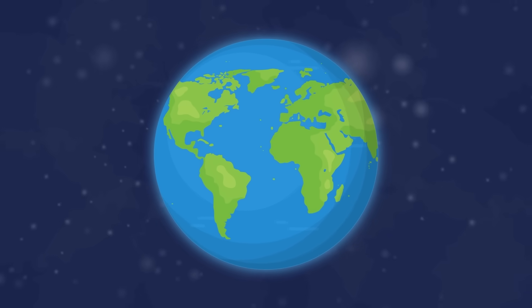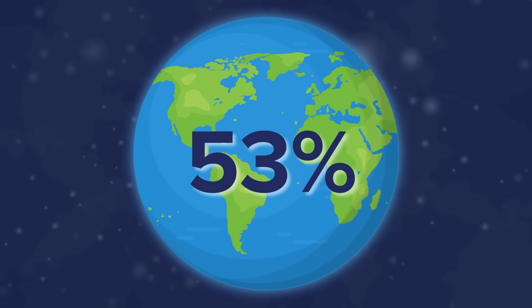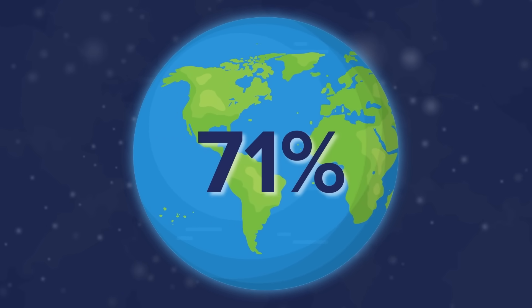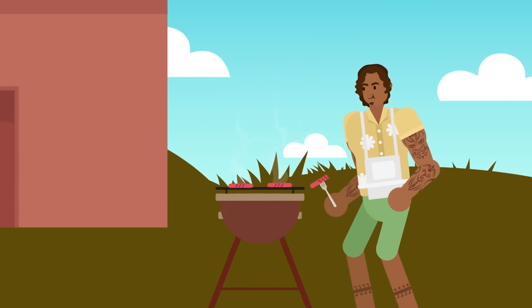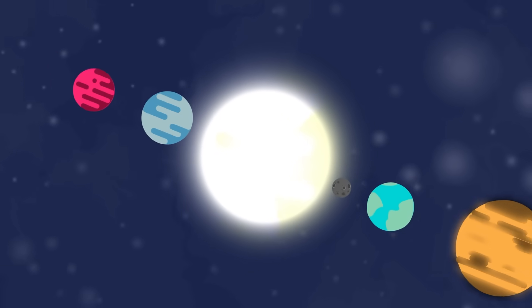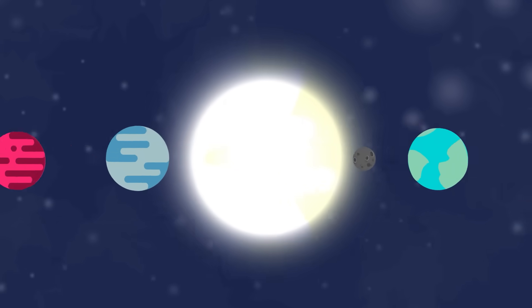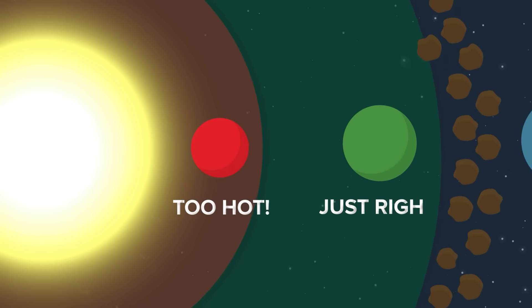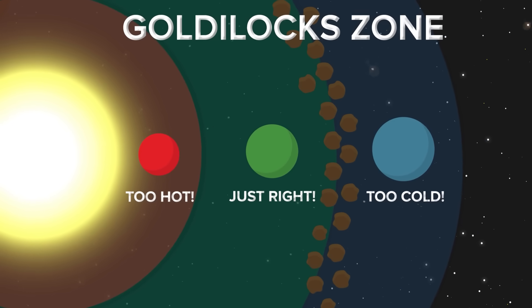Earth is often referred to as a water planet, with 71% of Earth's surface being covered in salt or fresh water. Essentially, we're all sort of living on mountains sticking out of the water. This is all made possible because Earth is in the Goldilocks Zone, close enough to the sun for water to not just turn to ice, but far enough away for water to not turn into steam.